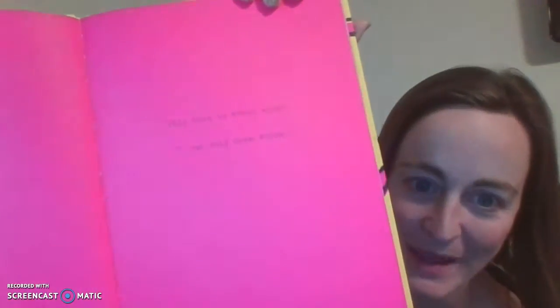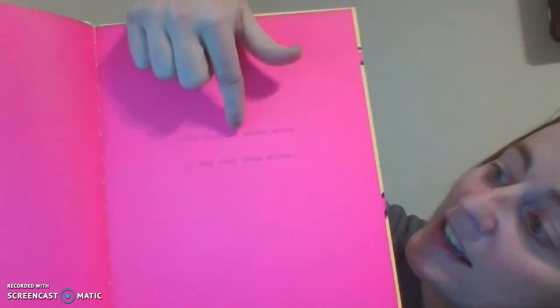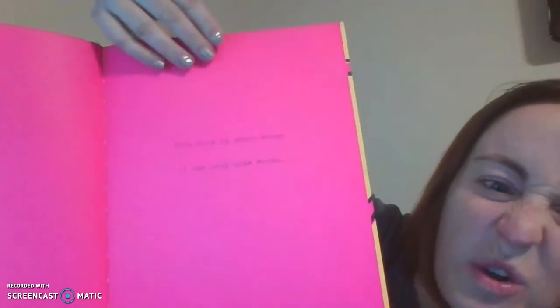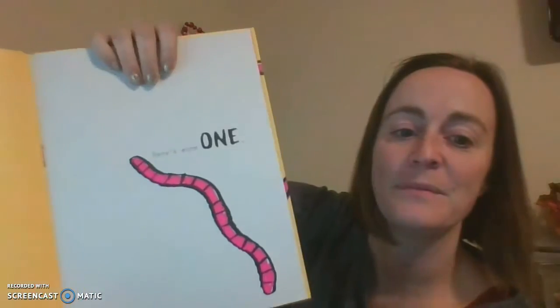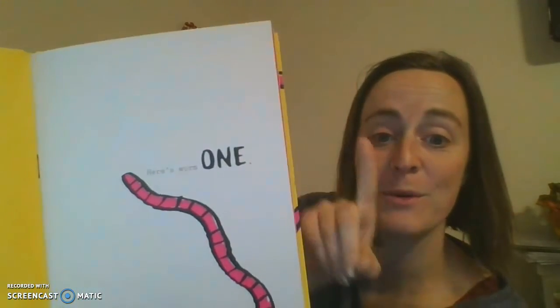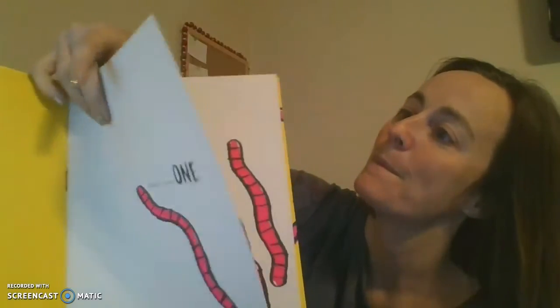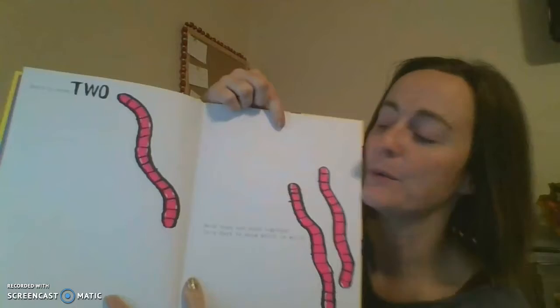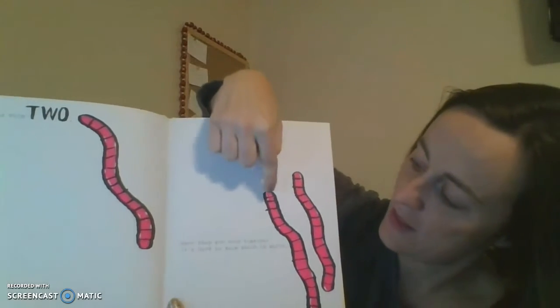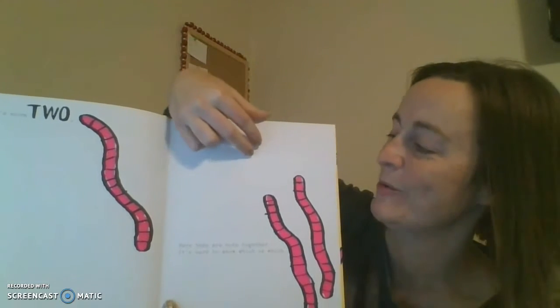And it's also bright pink. Can you see the words there? This book is about worms. I can only draw worms. Here's worm one. One worm. Here's worm two. Here they are both together. It's hard to know which one is worm one and worm two.